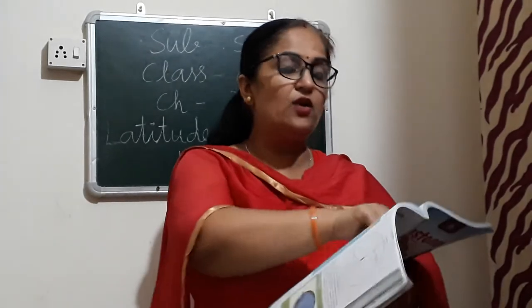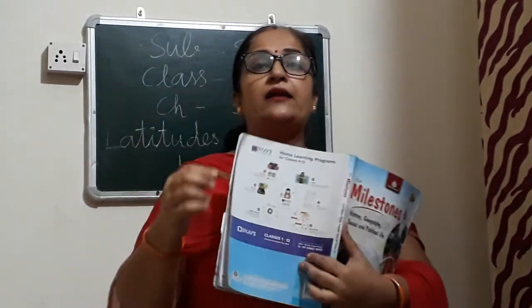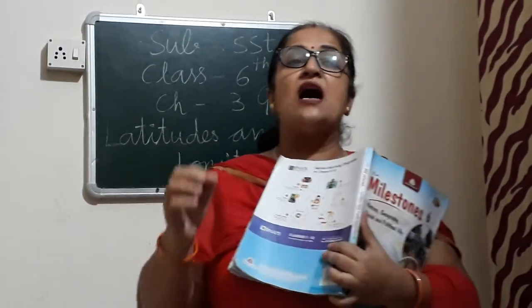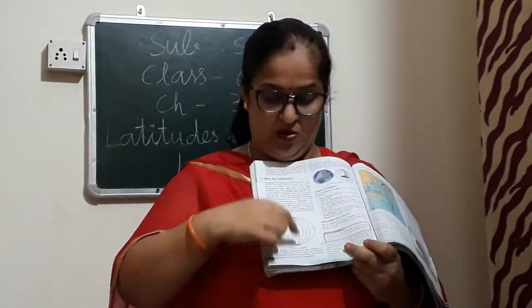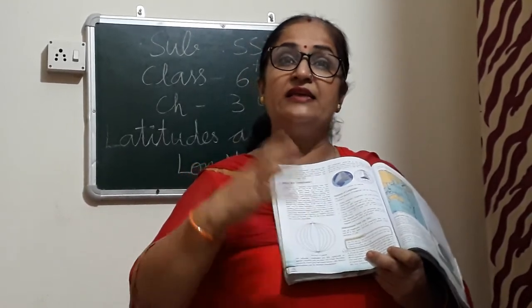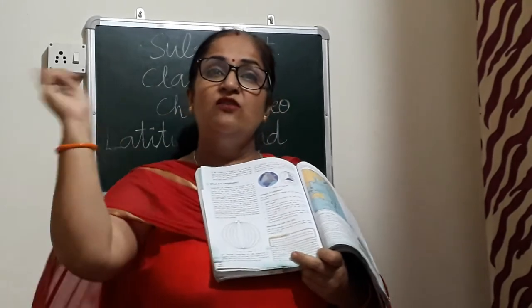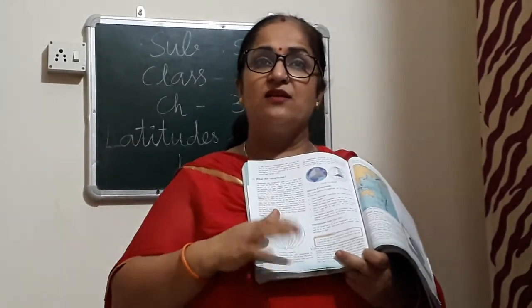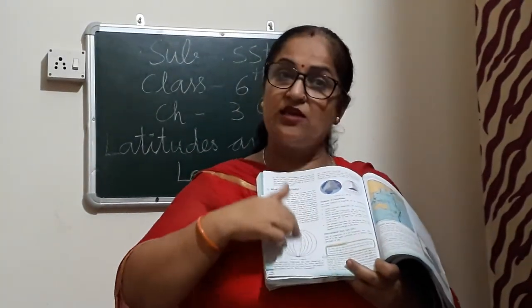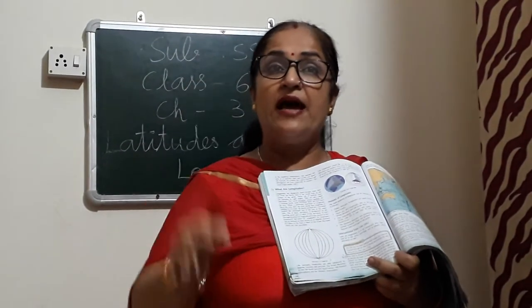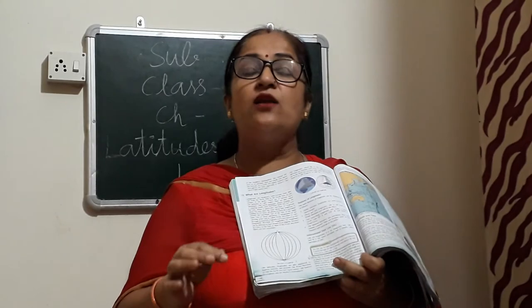Now, what are longitudes? Unlike latitudes, longitudes are imaginary circles that run in a north-south direction. In this picture you can see — these are semi-circles. Latitudes were full circles and these are semi-circles. They pass through the north pole and the south pole. Unlike latitudes, longitudes are not equally spaced but they are equal in length. These lines are known as meridians.